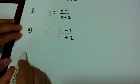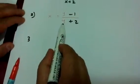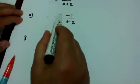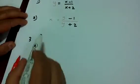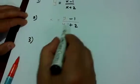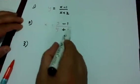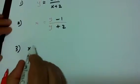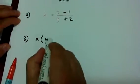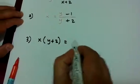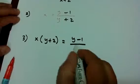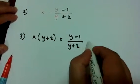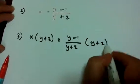Step number three, we need now to solve for y, this y here. Now, how do we do this? Let's multiply both sides by the denominator y plus 2. So on this side, we will have x times y plus 2. The other side, we will have y minus 1 over y plus 2 times y plus 2.